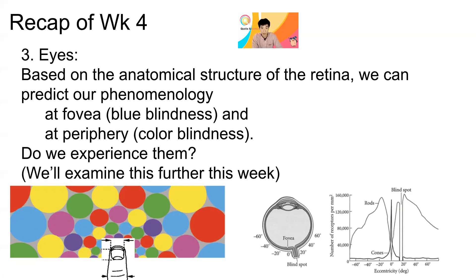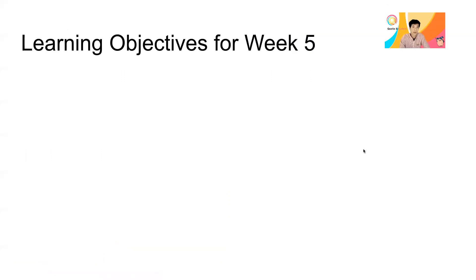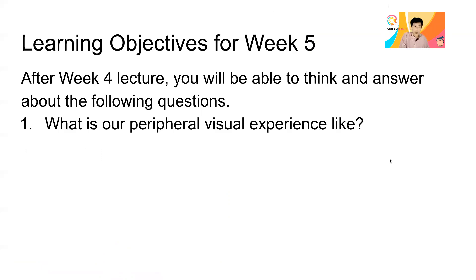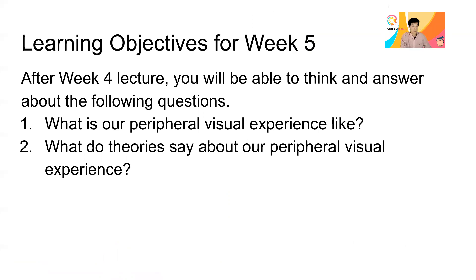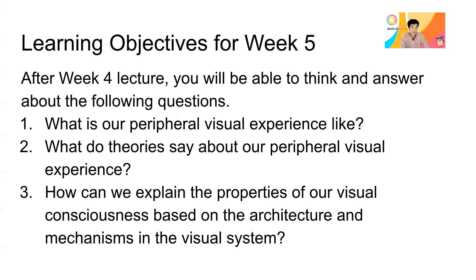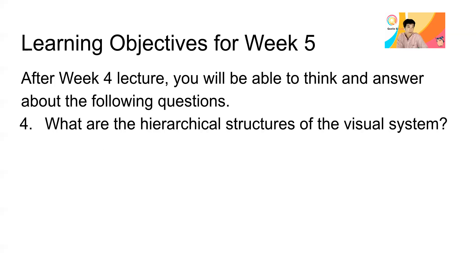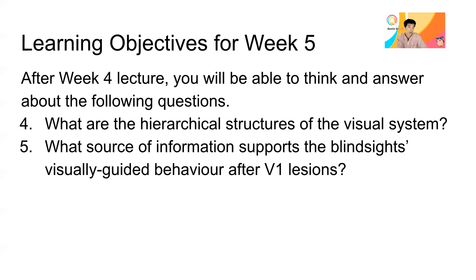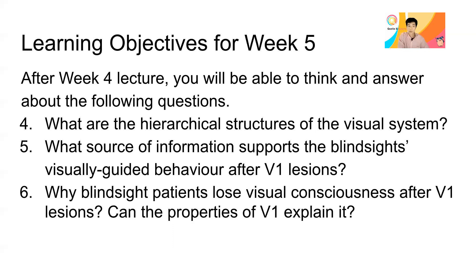We'll examine this further this week. The learning objectives for this week are as follows. First, we'll ask what our peripheral visual experience is like, in a bit more detail. Second, what do theories about visual consciousness actually say about our peripheral visual experience? Third, how can we explain the properties of our visual consciousness based on the architecture and mechanism of the visual system? Fourth, we'll ask what the hierarchical structures of the visual system are, and what source of information supports blindsight's visually guided behaviors after V1 lesions. Finally, why do blindsight patients lose visual consciousness after V1 lesions, and can the properties of V1 explain this loss of consciousness?